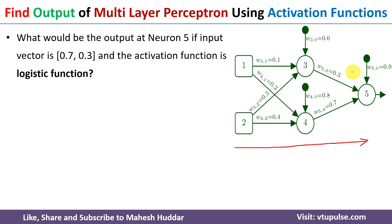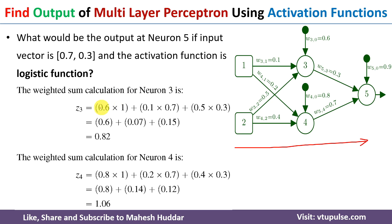To calculate the output at the hidden layer neurons, we need to calculate the weighted sum — the weighted sum at neuron 3 and the weighted sum at neuron 4. The weighted sum is the summation of the multiplication between weight and input. So z3 equals: the bias weight is 0.6 and input is 1, giving 0.6 × 1; from neuron 1 the weight is 0.1 and input is 0.7, giving 0.1 × 0.7; and from neuron 2 the weight is 0.5 and input is 0.3. Solving this gives a weighted sum of 0.82 at neuron 3.